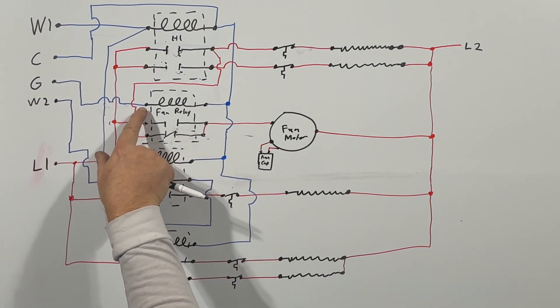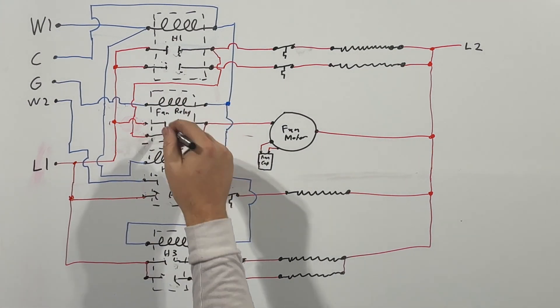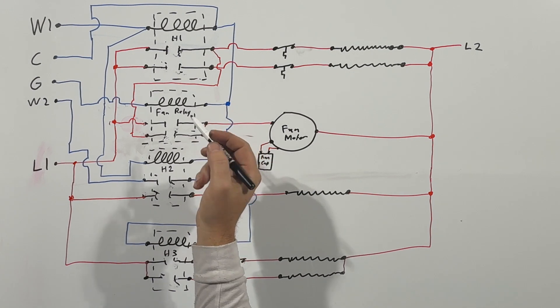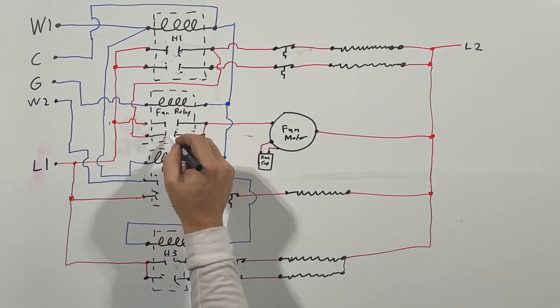Well, if W1 is not energized, we have no high voltage going to the fan motor, so it won't turn on. So what we do is we connect our G directly to the fan relay coil, and that will energize this.